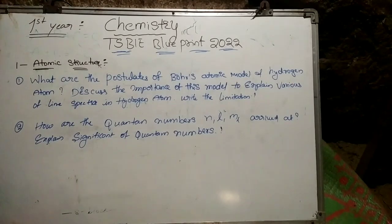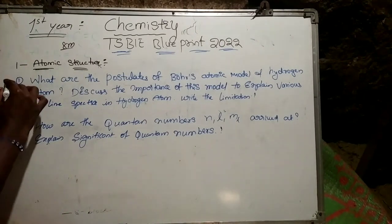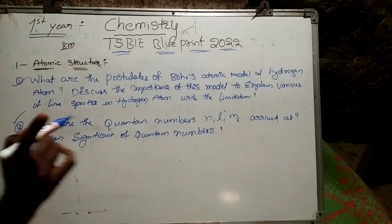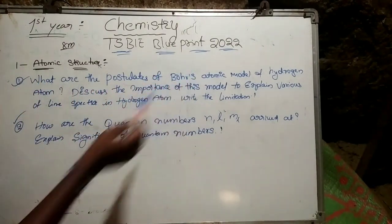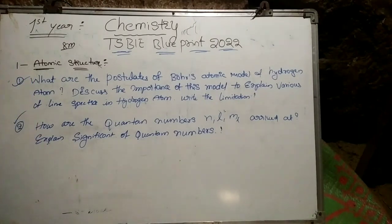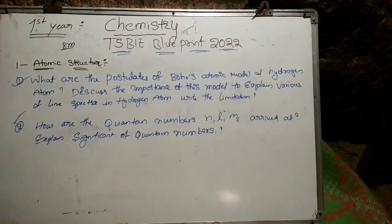Friends, here we have 8-mark questions from the first lesson of atomic structure. We have two important questions. The first question is: what are the postulates of Bohr's atomic model of hydrogen atom? We have to discuss the importance of the model to explain various line spectra in hydrogen atom.